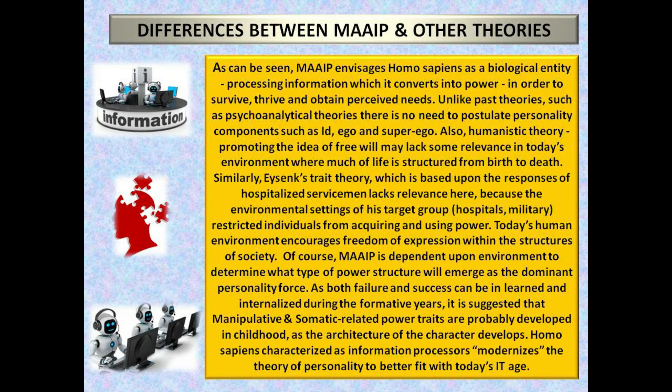Today's human environment encourages freedom of expression within the structures of society. MAIP is dependent upon environment to determine what type of power structure will emerge as the dominant personality force. As both failure and success can be learned and internalized during the formative years, it is suggested that manipulative and somatic-related power traits are probably developed in childhood, as the architecture of the character develops. Homo sapiens characterized as information processors modernizes the theory of personality to better fit with today's IT age.